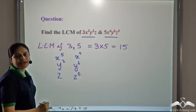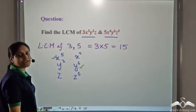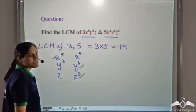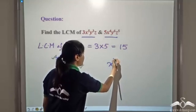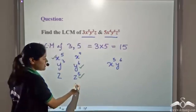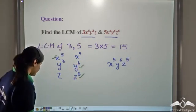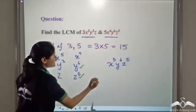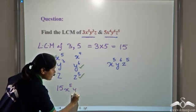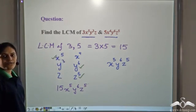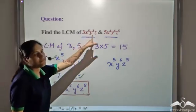Look at x and take the highest power, which is x⁵. Consider y and take the highest power, which is y⁶. Consider z and take the highest power, which is z⁵. So the LCM of the algebraic part is x⁵y⁶z⁵. Therefore the LCM of these two terms is 15 × x⁵y⁶z⁵ = 15x⁵y⁶z⁵.